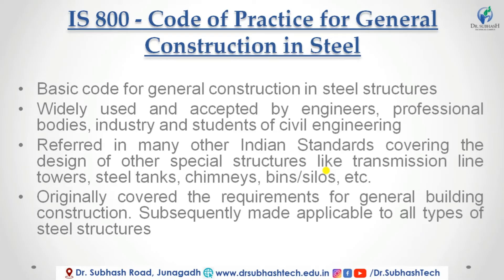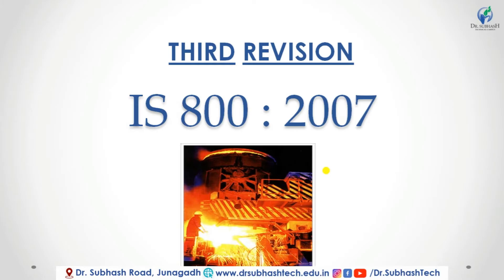IS 800 is the code of practice for general construction in steel, widely used and accepted by engineers, professional bodies, industry, and students of civil engineering. It is referred to by many other Indian standards covering the design of other special structures like transmission line towers, steel tanks, chimneys, beams, and others. Originally it covered requirements for general building construction; subsequently it was made applicable to all types of steel structures. The third revision as per IS 800-2007 covers many factors of safety, design simulation, and effective section design, incorporating parameters established through recent decades of research.